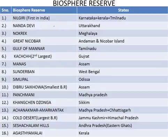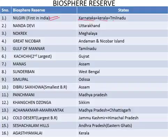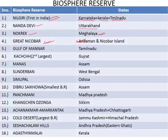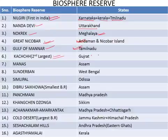The first Biosphere Reserve in India is the Nilgiri Biosphere Reserve, confined to the states of Karnataka, Kerala, and Tamil Nadu. Second is the Nanda Devi Biosphere Reserve, situated in the state of Uttarakhand. Third is the Nokrek Biosphere Reserve in the state of Meghalaya. Fourth is the Great Nicobar Biosphere Reserve in the Union Territory of Andaman and Nicobar Islands. Fifth is the Gulf of Mannar in the state of Tamil Nadu.